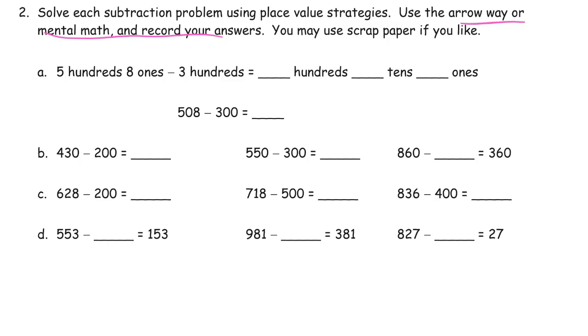Five hundreds eight ones minus three hundreds. So we've got five hundreds, we're subtracting three hundreds, we're gonna have two hundreds left.